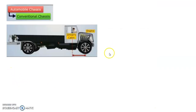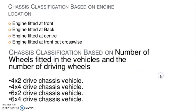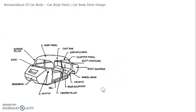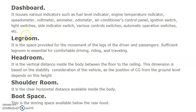Automobile chassis types include: conventional chassis, semi-forward chassis (half engine fitted inside driver's cabin and remaining half in front of driver's cabin), and full-forward chassis. Chassis classification is also based on engine location and on the number of wheels fitted. Body nomenclature covers the different parts of the car body: bonnet, rear board, door pillars, body seal, dashboard, legroom, headroom, shoulder room, and boot space. Thank you very much.